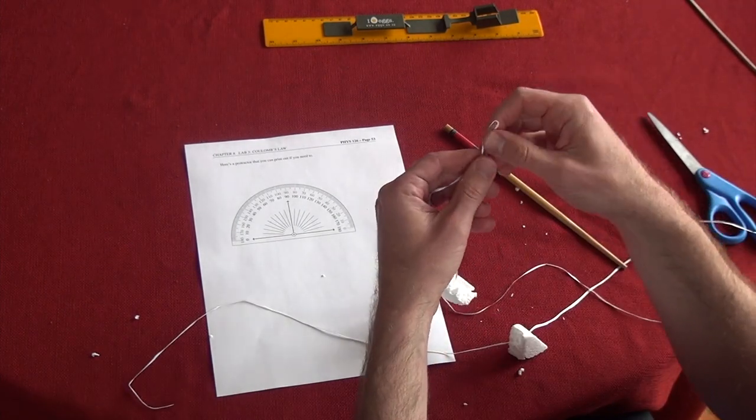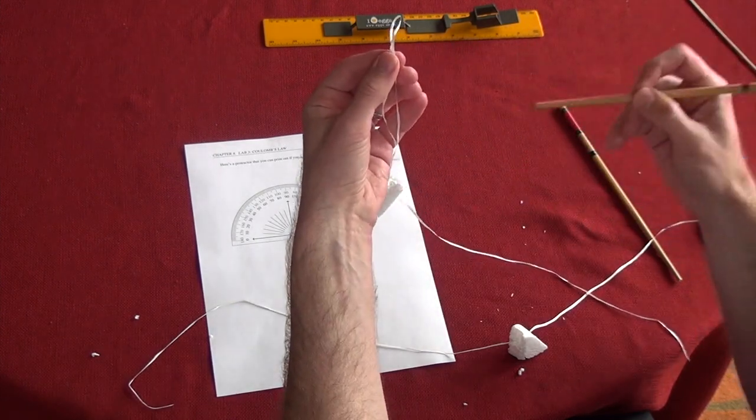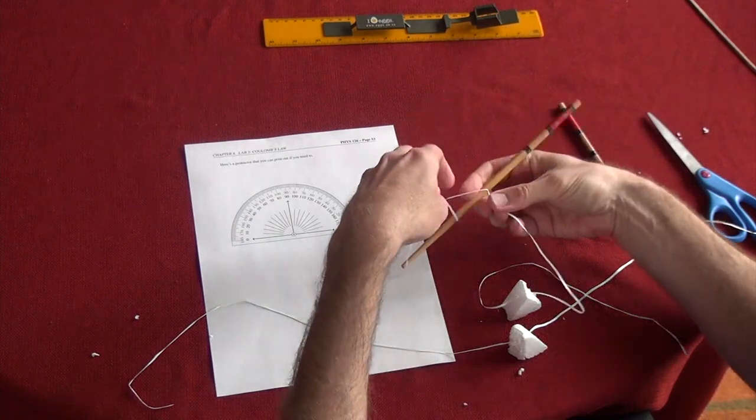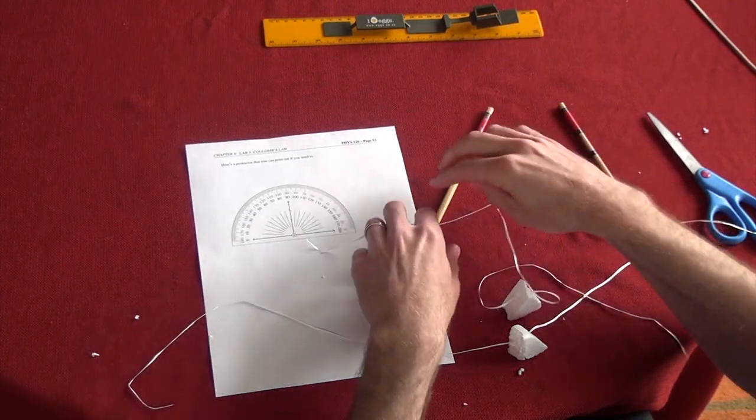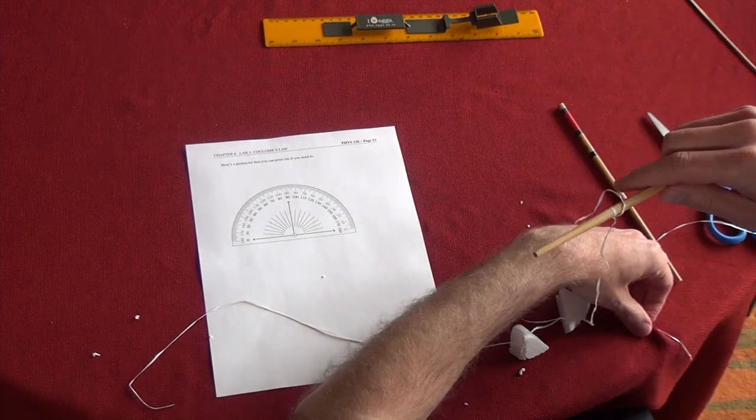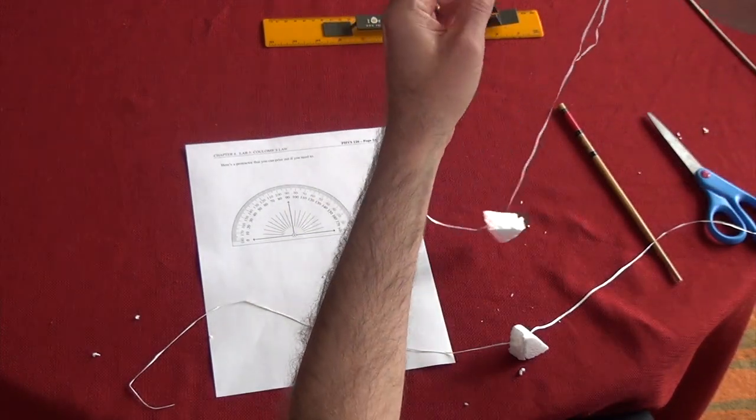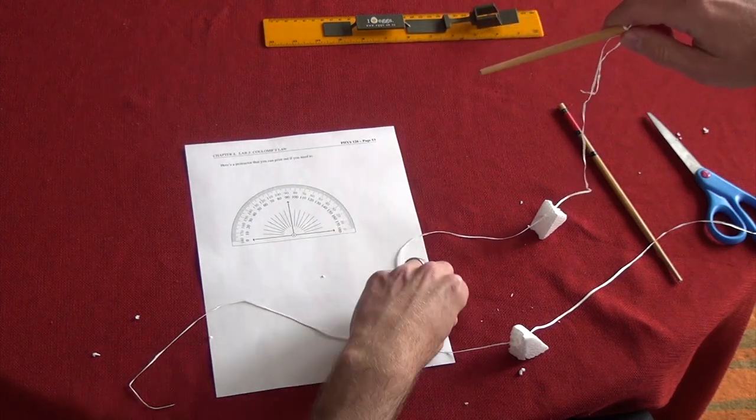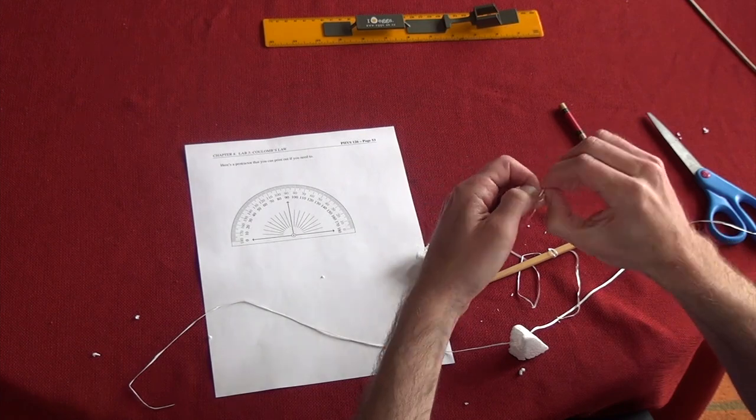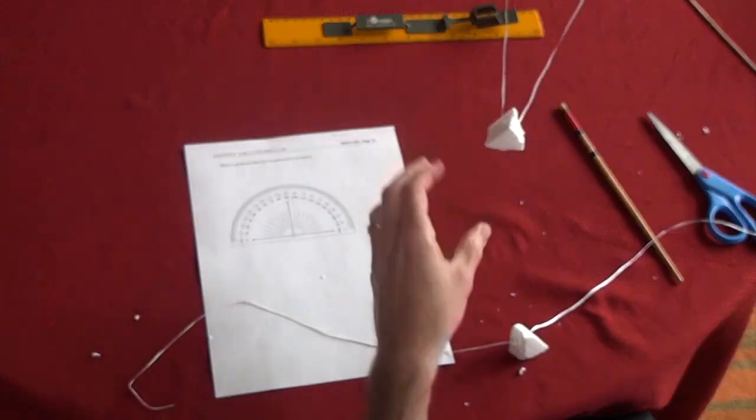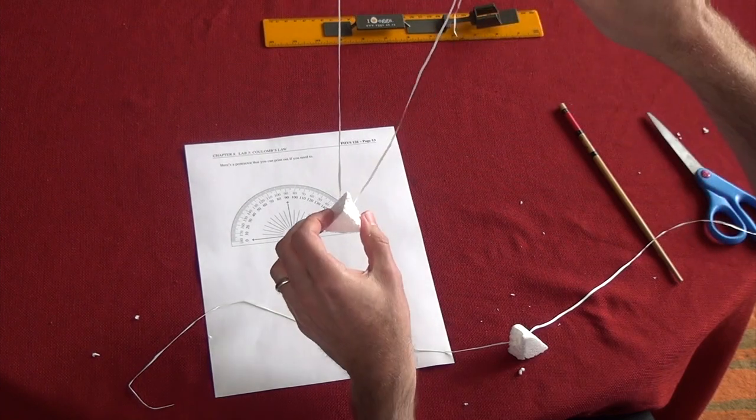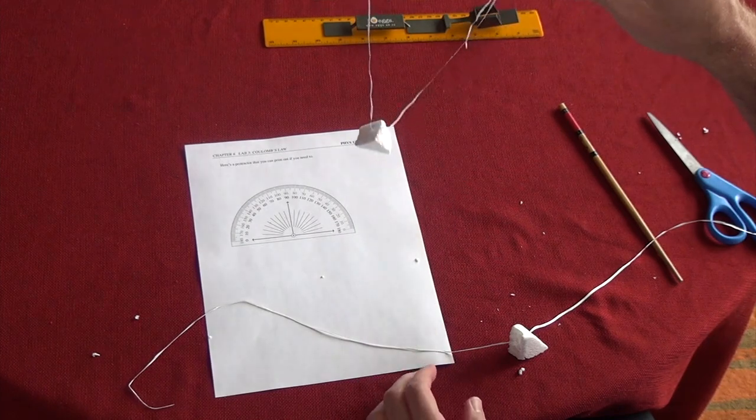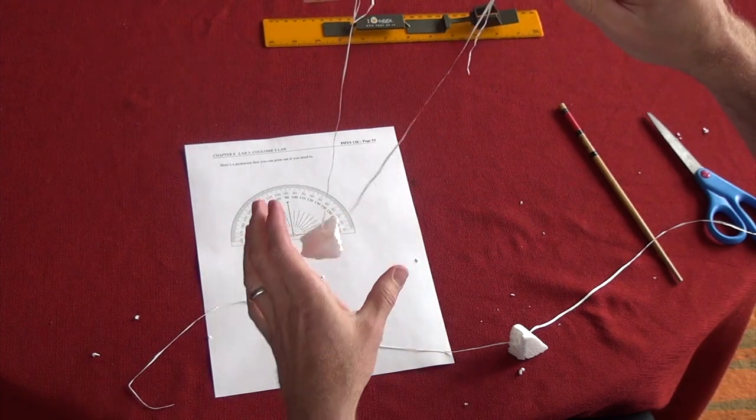What we're going to do is tie a little loop in the end of our thread, slide it around the chopstick and just tighten it up. And then we're going to make a little triangle. So we want to suspend the styrofoam in a triangle so that it only is going to swing in one direction. So what you can see is we've formed a nice little triangle here, and our styrofoam is going to hang on the end of it and just swing in one direction. It's going to have a hard time swinging back and forth side to side.